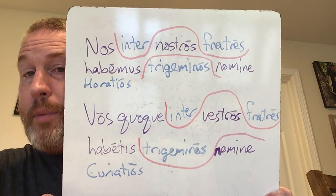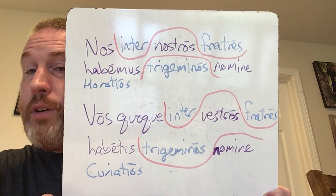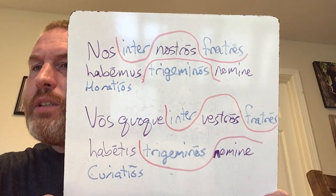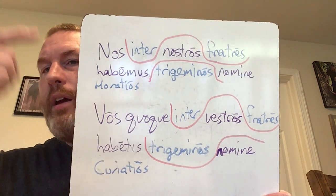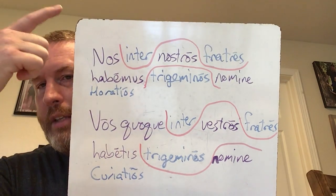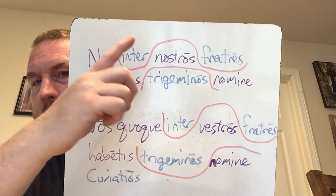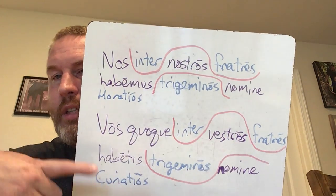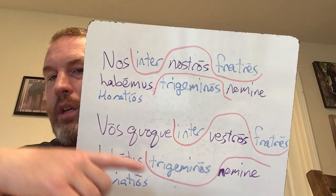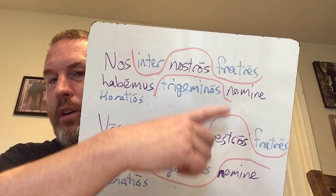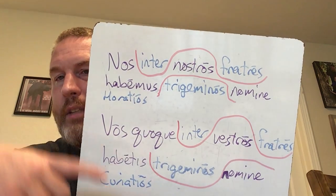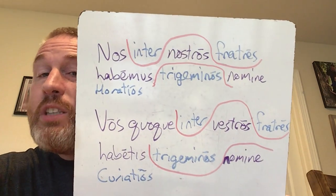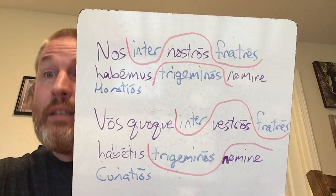Did you notice that they're very much the same structure? Nos, vos quoque. Inter, inter. Nostros, nostros. Fratres, fratres. Habetis, habemus. Trigeminus, trigeminus. Nomine, nomine. Coratios, coratios. It's almost like they're almost exactly the same but slightly different.